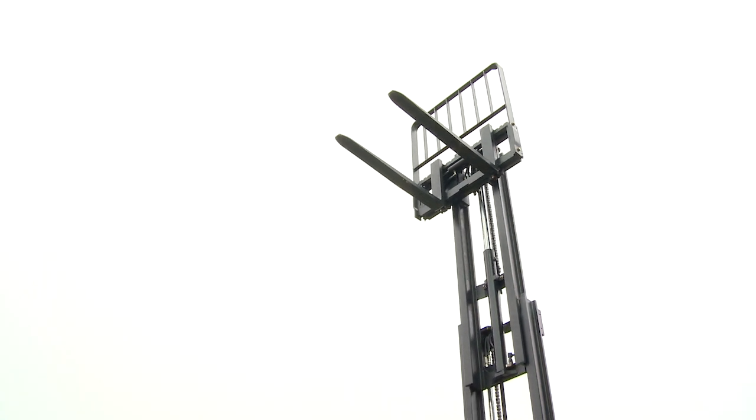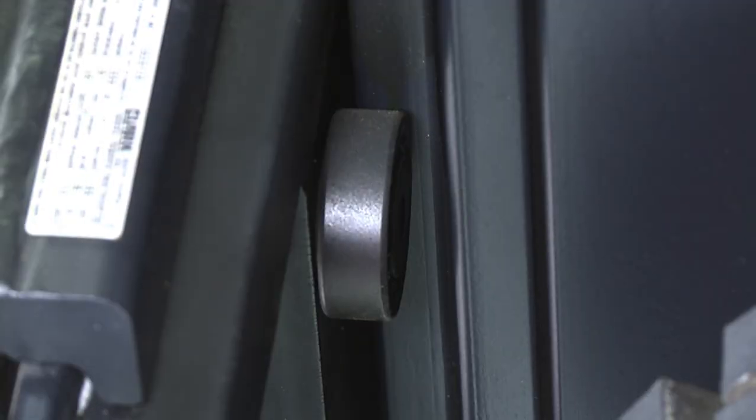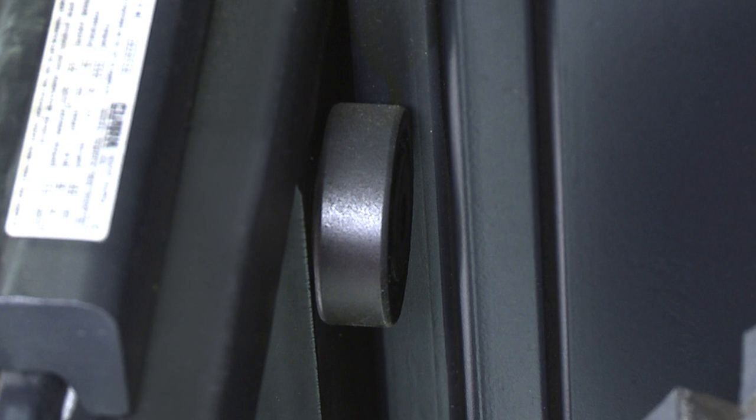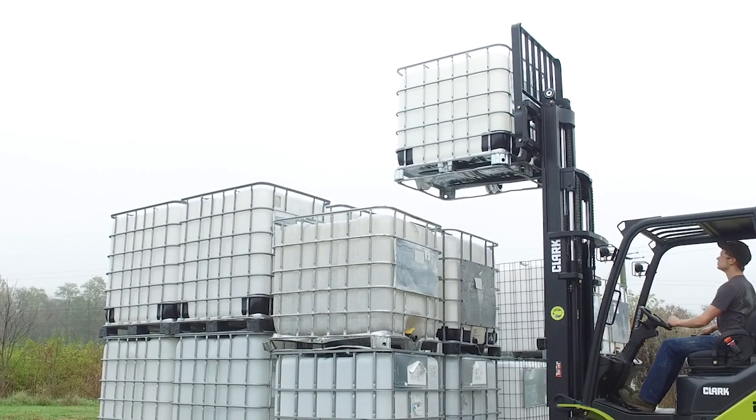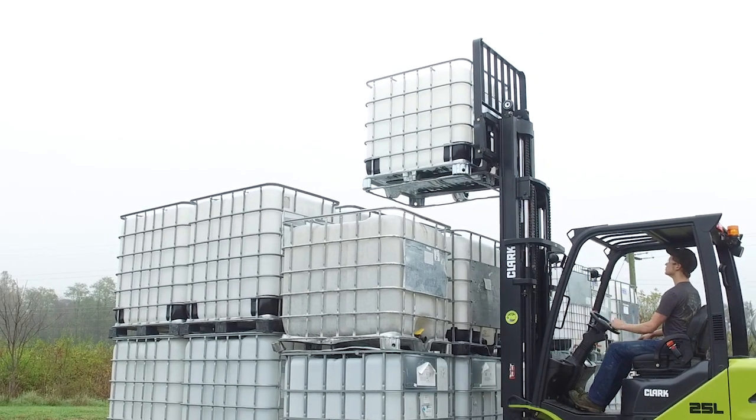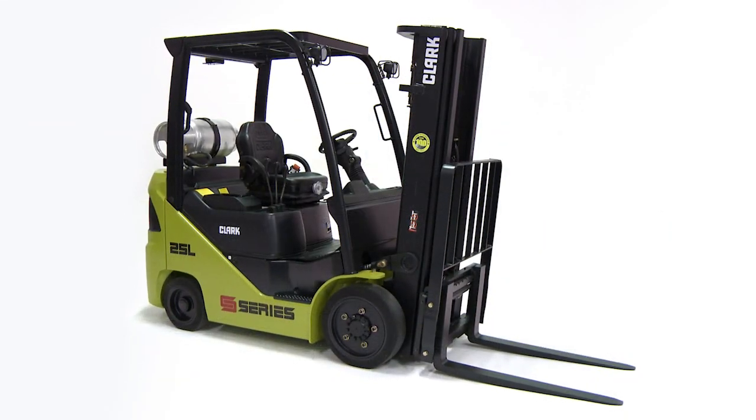The carriage also has external side thrust rollers which reduce carriage twisting and bending. The side thrust rollers also help prevent the inner rail from spreading.